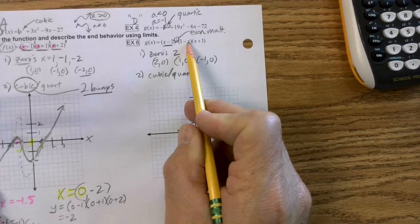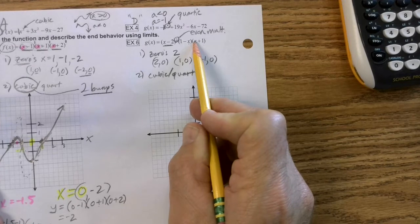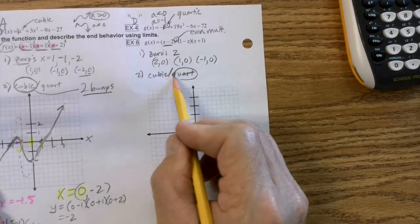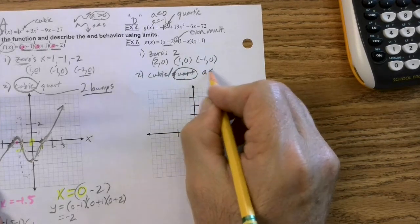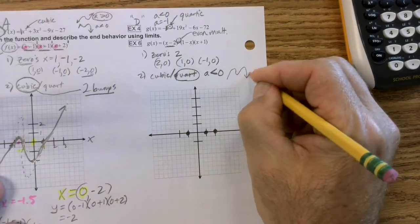So here's x squared times negative x. Did you hear me emphasize that? Would be negative x cubed times x would be negative x to the fourth. So it's a quartic.